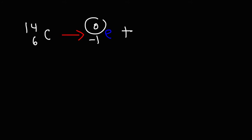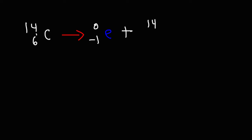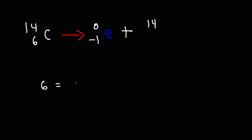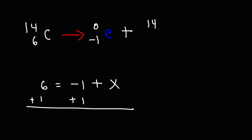So right now this is 0, which means that we're missing a 14, because we need a sum of 14 on the right and 14 on the left. Now on the left side, the total nuclear charge is 6. On the right side, it's negative 1. So negative 1 plus what number is 6? You can write an equation: 6 is equal to negative 1 plus some missing number x, and then do some algebra. In order to get x by itself, we need to add 1 on both sides. So x is 7.